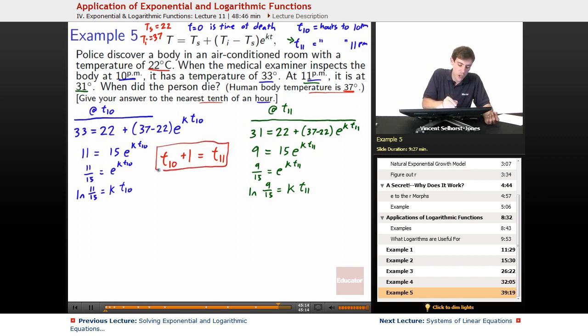This key realization will allow us to solve things. So we can plug this in over here. So we've got ln(9/15) equals k times (t_10 + 1). So k t_10 plus k. Hey, over here we know what k t_10 is. It's ln(11/15). Let's bring back down this. So ln(9/15) is equal to k t_10. We swap that out for ln(11/15) plus k.